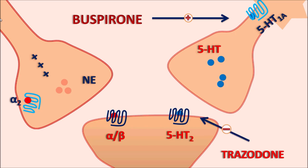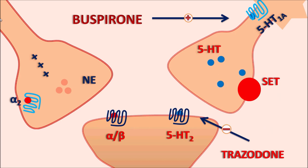Trazodone blocks the 5HT2 receptors, producing antidepressant activity. Additionally, serotonin neurons are equipped with the serotonin reuptake transporter (SERT). Some 5HT is taken back into the nerve terminal through SERT, but trazodone blocks this transporter, inhibiting reuptake and increasing 5HT levels within the synaptic cleft. The exact mechanism of trazodone's antidepressant activity is still not fully clear, but both mechanisms contribute, with effects appearing after about two weeks of treatment.